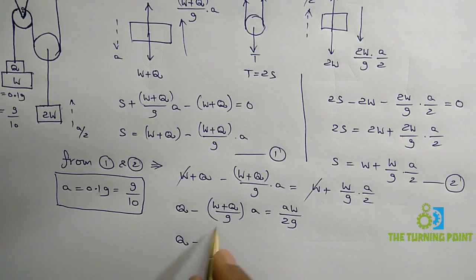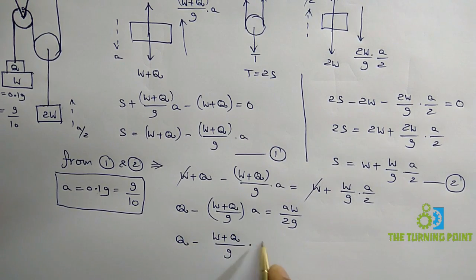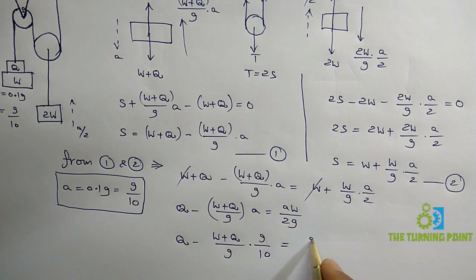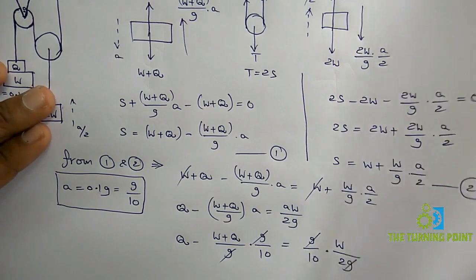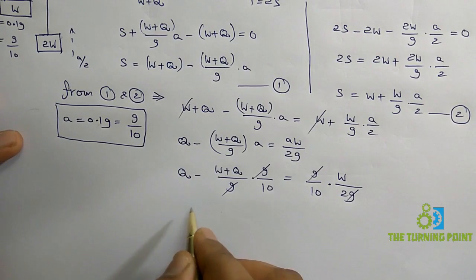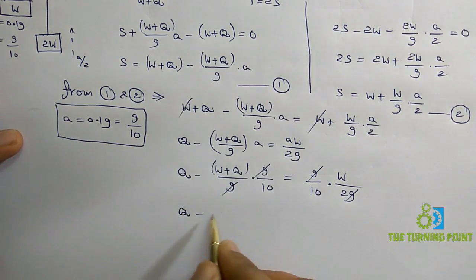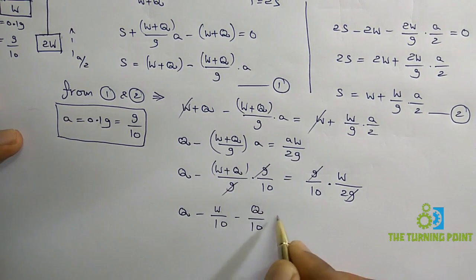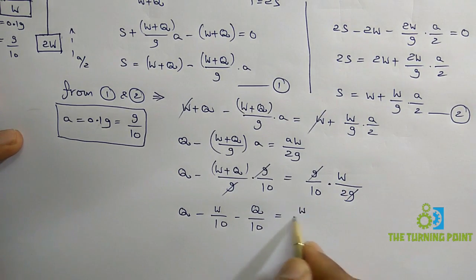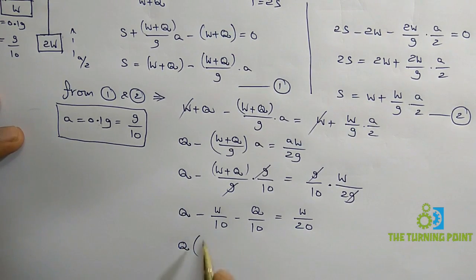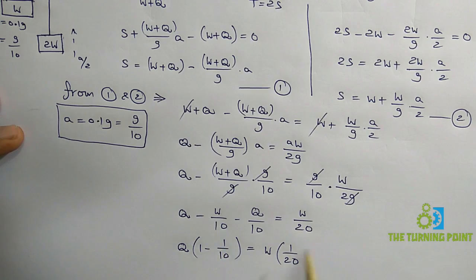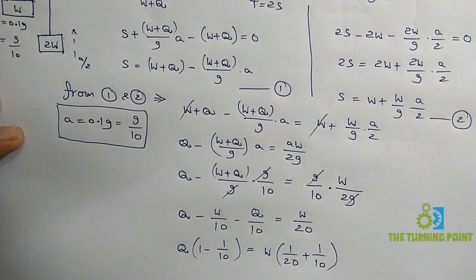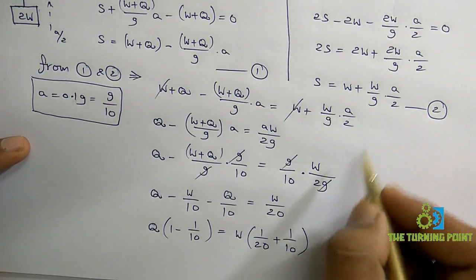After substituting, we get: Q minus (W+Q)/10 equals W/20. Expanding: Q minus W/10 minus Q/10 equals W/20. Taking Q common on the left: Q times (1 minus 1/10) equals W/20 plus W/10. This gives Q times 9/10 equals W/20 plus 2/20, which is 3W/20.